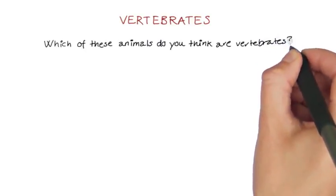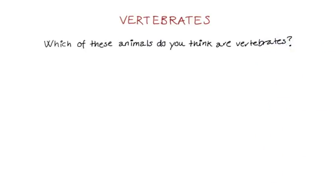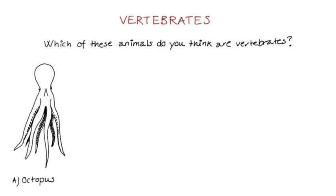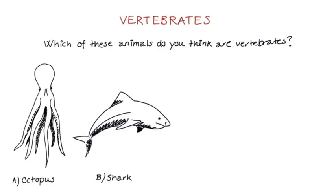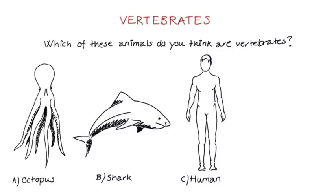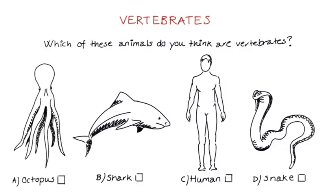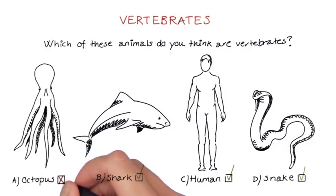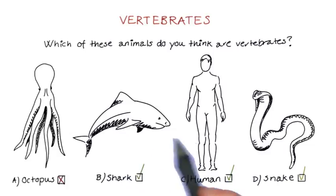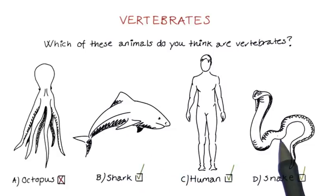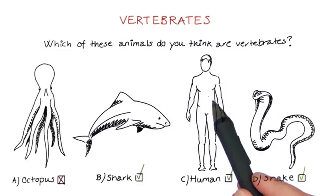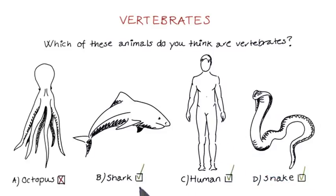Which of these animals do you think are vertebrates? Your choices are an octopus, a shark, a human, or a snake. Check all the answers you think are correct. All of these animals are vertebrates except the octopus, which is a type of invertebrate related to clams. Sharks have cartilaginous rather than bony backbones. Snakes also have backbones, even though they lost their limbs over the course of their evolution. And of course, we humans have backbones as well. So the correct answers are B, C, and D.